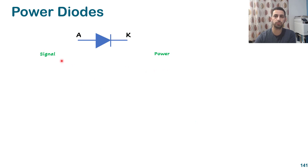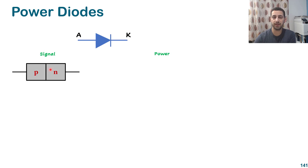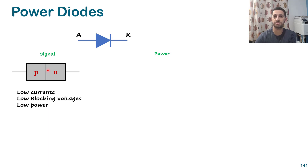Now we want to know what is the difference between signal diodes and power diodes. The signal diode is what we covered in electronics modules and some of them we used for rectification, but still in very limited or constrained applications. The signal diode is just a p-n junction where p-type and n-type are a result of doping the semiconductor, usually silicon. That diode has low current capability, low blocking voltage capability, and can only work in low power circuits.